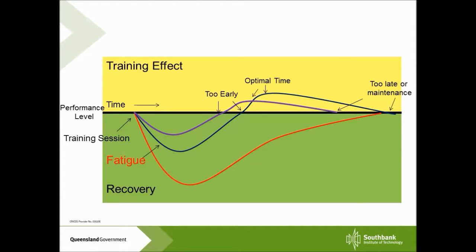If you do a training session that's actually too hard or you have overtrained, the body goes into more of a state where it recognizes it as an injury rather than looking for a training effect. At this point, it will look to just get back to previous performance levels — it won't look to actually achieve a supercompensation or overcompensation effect.